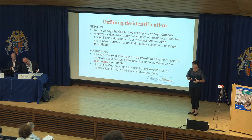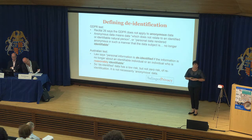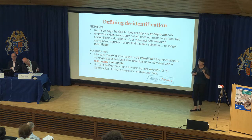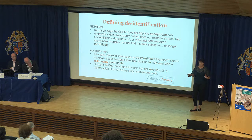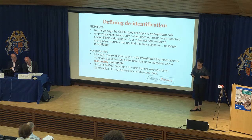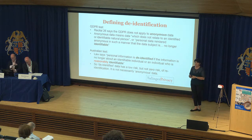There's actually a difference there. The test for anonymous data under the GDPR — to take something outside the scope of GDPR — it needs to be no one identifiable, full stop. The Australian definition sets a lower standard: as long as the person is not reasonably identifiable, now it's de-identified, it's outside the scope of the Act.